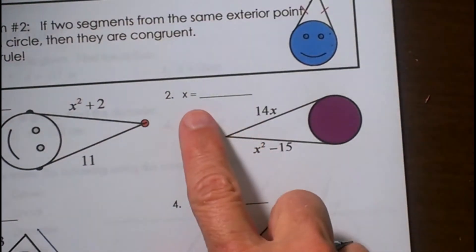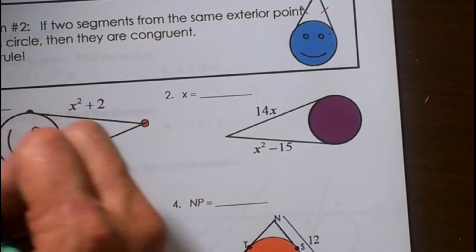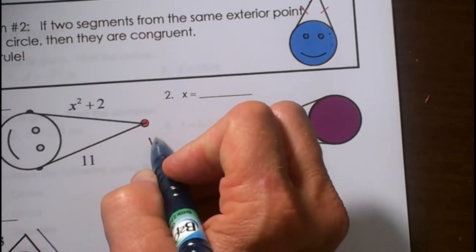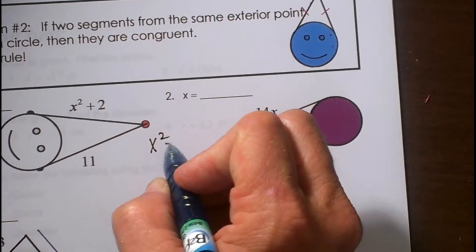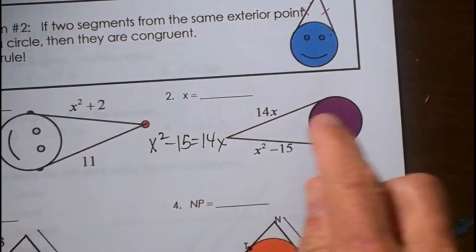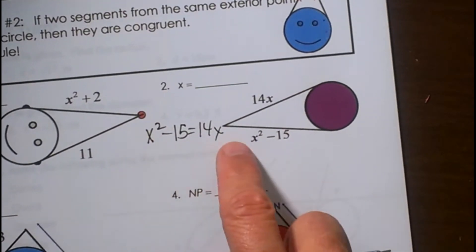Okay, so number 2. We've got these two segments. We're again going to set them equal to each other, so we have x² - 15 equals 14x. Now we don't know the length of either segment because they both have a variable, so you just set them equal to each other.